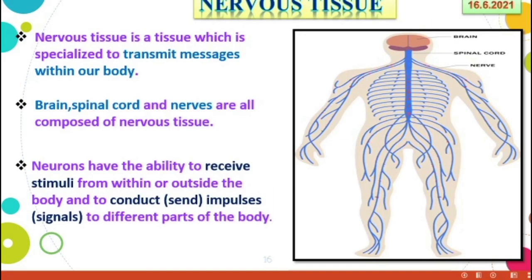Nervous tissue is a tissue which is specialized to transmit messages within our body — sending and transmitting messages from the brain to other parts, or from other parts back to the brain. This nervous system is composed of three main parts: brain, spinal cord, and nerves. The brain is a very important organ — like a nuclear computer — it commands and receives messages and commands particular organs. The brain is connected with the spinal cord, and the spinal cord connects to nerves throughout the entire animal body.